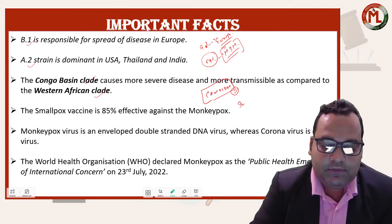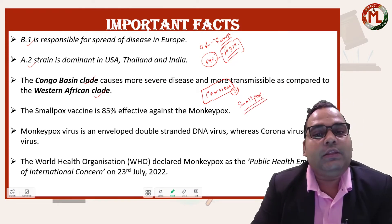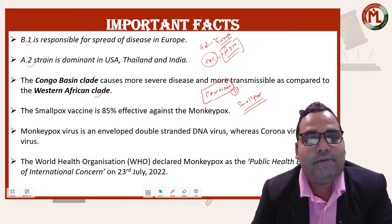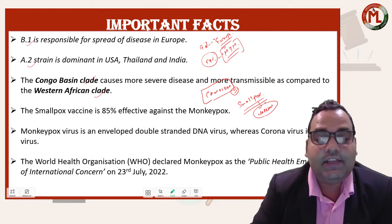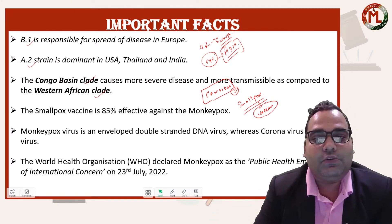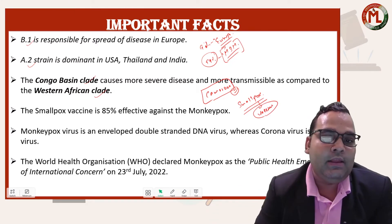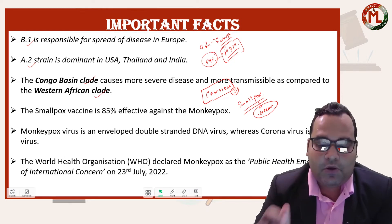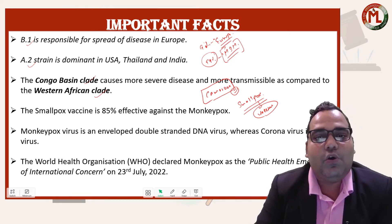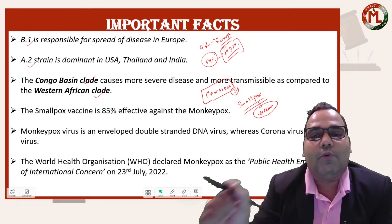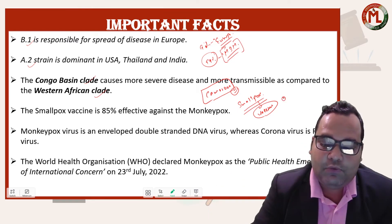Monkeypox belongs to the orthopoxvirus family, which also includes smallpox. The smallpox vaccine is also effective against monkeypox. The reason is that monkeypox and smallpox both belong to the orthopoxvirus family, so the vaccine works against both.